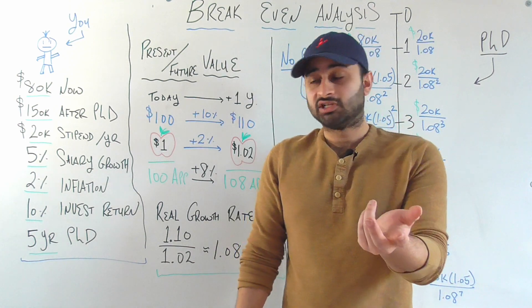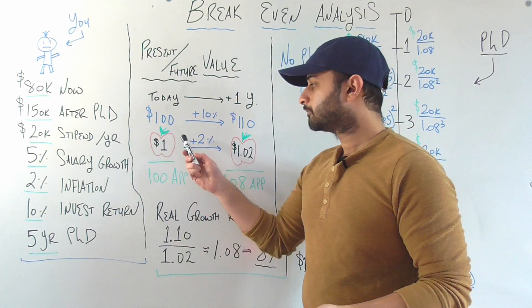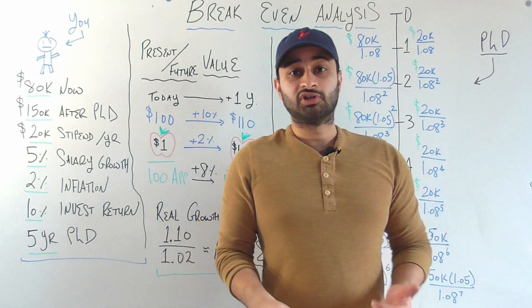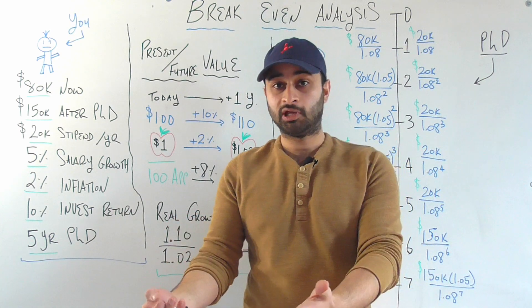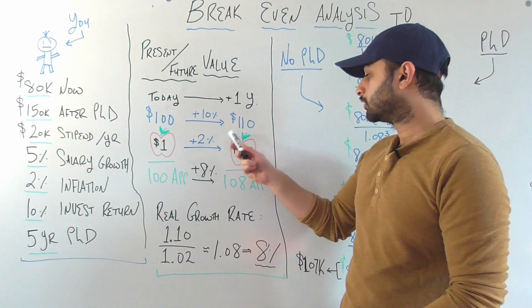So for example, you have an apple today, let's say, which costs $1. Since the cost of goods and services in the economy are increasing on average by 2% per year, that same apple in one year is going to cost you $1.02. So that's just taking $1 and 2% more.